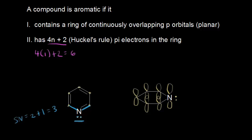Looking at the number of pi electrons in pyridine, there are two, four, and six pi electrons — which fulfills Huckel's rule. We can see that pyridine is a ring of continuously overlapping p orbitals; those p orbitals can overlap side by side, and those six pi electrons can be delocalized throughout the ring. Since this meets both criteria, pyridine is an aromatic molecule with extra stability associated with it.